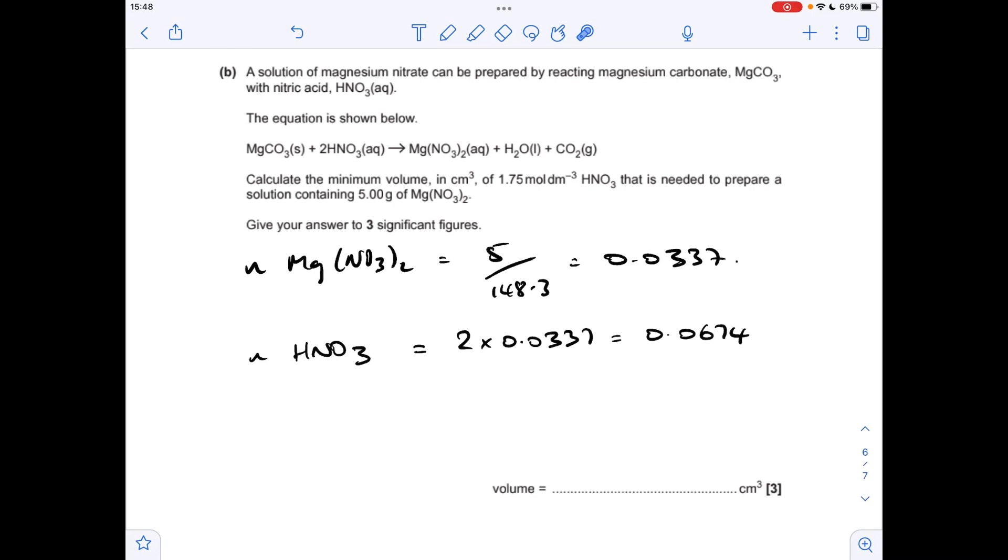The volume of acid needed is moles divided by concentration. The important thing to note here is that this volume is currently in decimeters cubed. They want it in centimeters cubed, so we need to multiply this by a thousand. To three significant figures, we need 38.5 centimeters cubed of the acid.